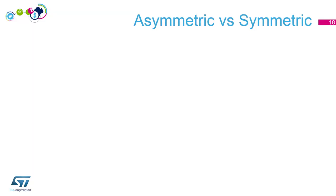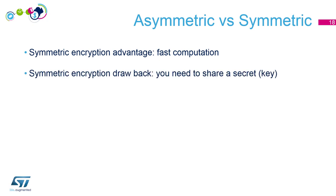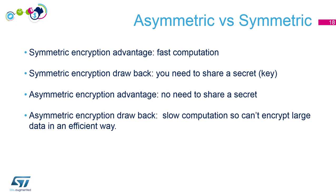Now we've seen the theory about symmetric and asymmetric encryption decryption. Let's remind the advantages and drawbacks for each. For symmetric encryption: the main advantage is fast computation, but the main drawback is you need a shared secret — before exchanging any data, you need to have a shared secret on both sides. For asymmetric encryption: the advantage is you don't need a shared secret, because you use a public key to encrypt and a private key to decrypt. But slow computation is the drawback — you can't encrypt or decrypt large data efficiently. Just reading this, you should think: why don't we combine both?